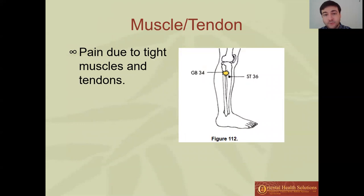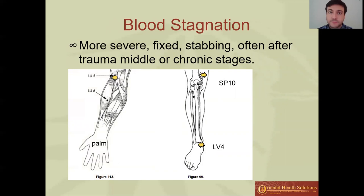Gallbladder 34 is the command point for muscles and tendons. If you have a muscle or tendon injury that is not healing, or if the pain is very tight and it's hard to move because there's too much tension, Gallbladder 34 works very well. There are many other points that help relax muscles and tendons, but this is my favorite — it tends to work almost instantly sometimes.